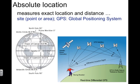Another term we use to understand absolute location is 'site.' When we're talking about the site, you're talking about a point or an area on the Earth's surface. So really they are basically synonymous.